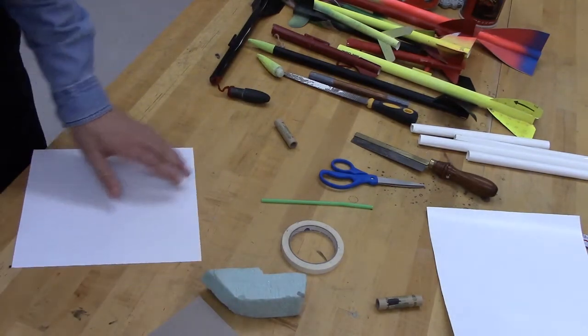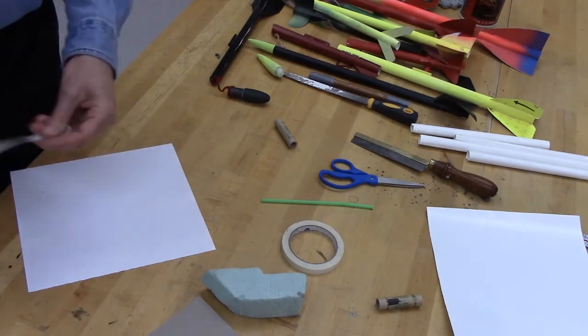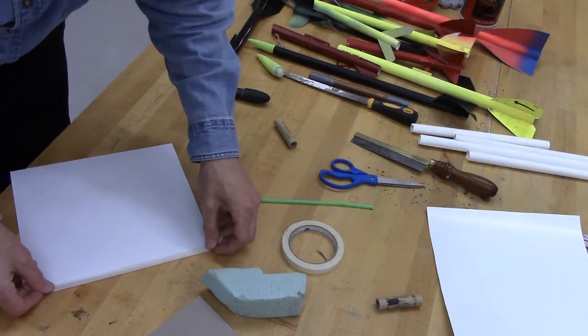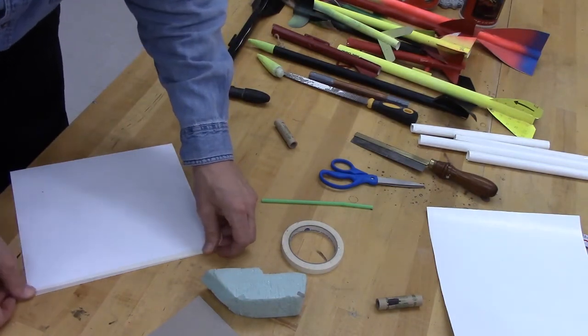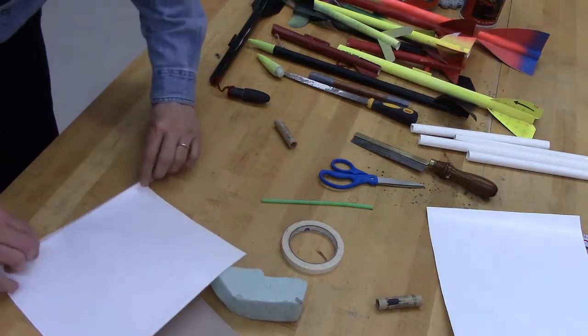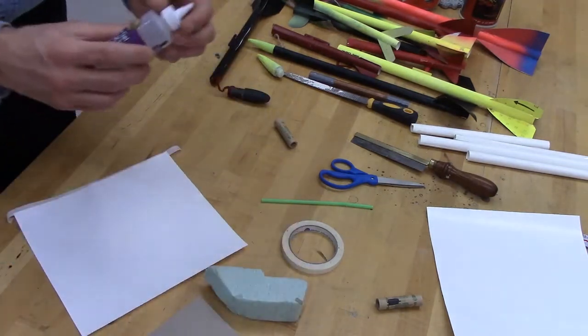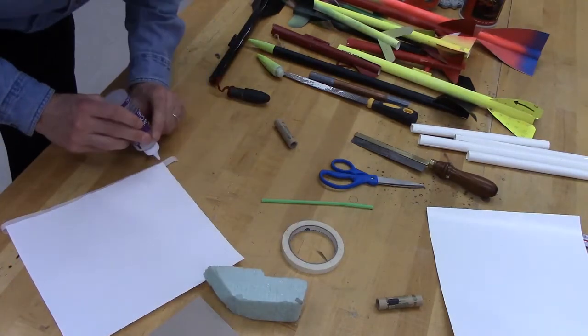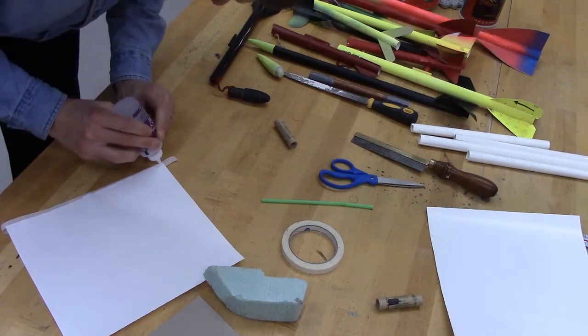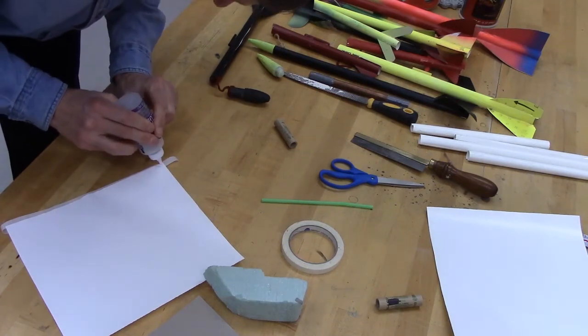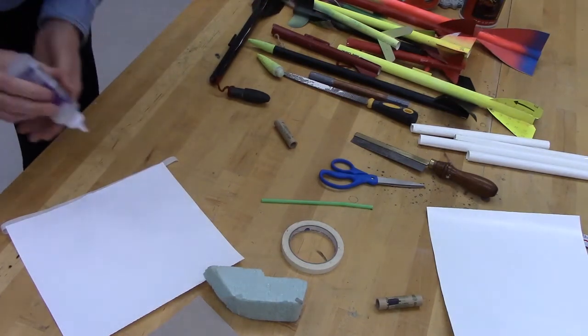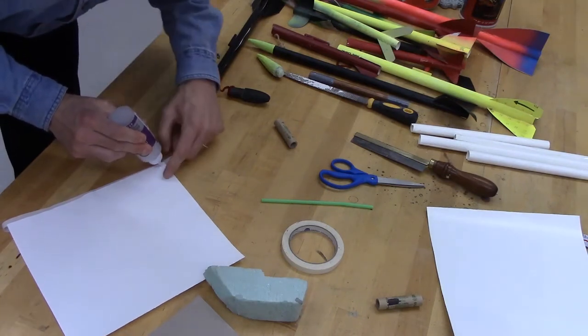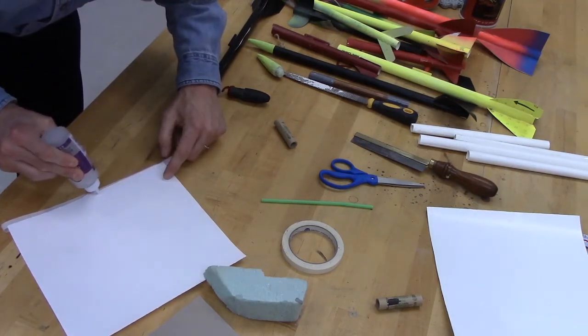So first I'm going to take some tape and attach it to this paper and flip it over. Take a little craft glue, and this is the part that's a little time-consuming because you have to let the glue dry, but the tape will hold it in place while it's drying. So make a little bead of glue.